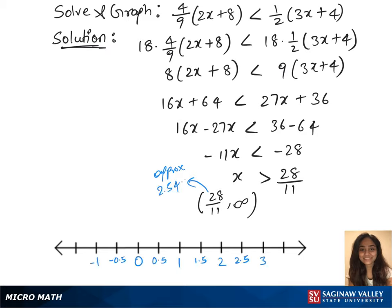So plot the points and look for 2.54. So that's close to 2.54. And mark it to the infinity and shade the region in between those two points.